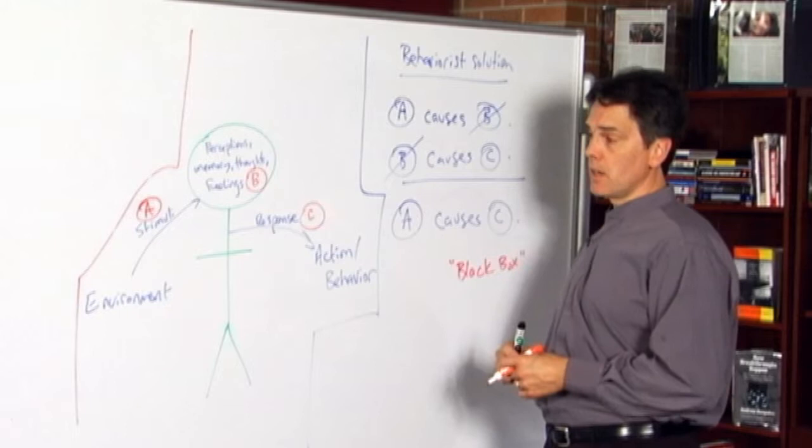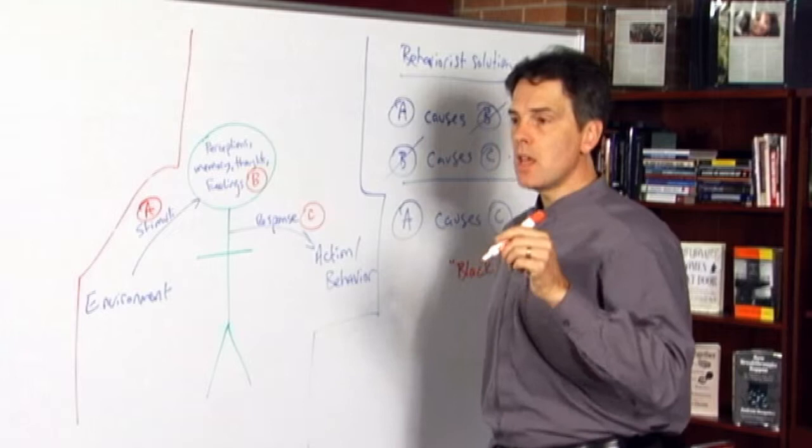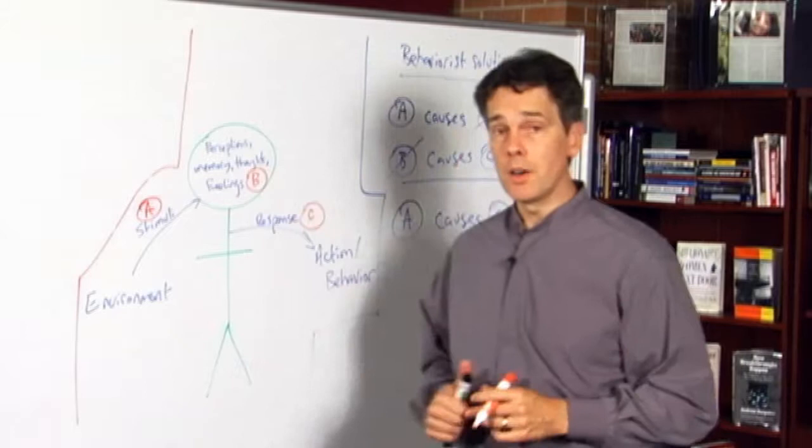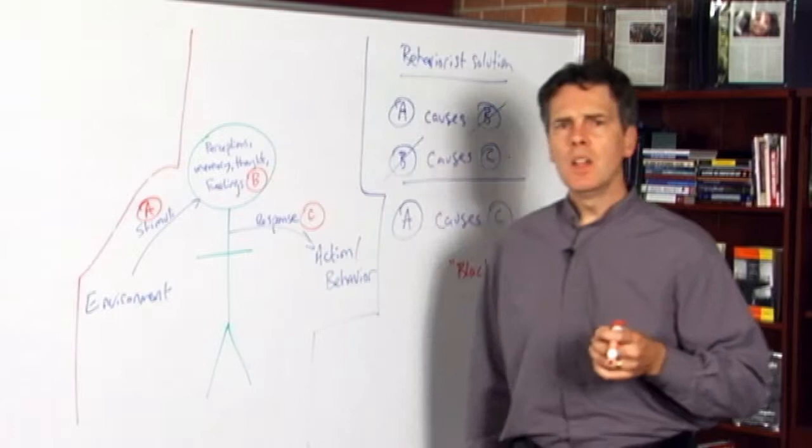One other assumption that we should point out or highlight that's been at least implicit throughout the presentation so far, is that in the relationships between A and B and between A and C, there is a regularized causal necessary set of correlations going on in their behaviors. That is to say that there is a deterministic system at work here, and this certainly is an important part of the behaviorist package here.